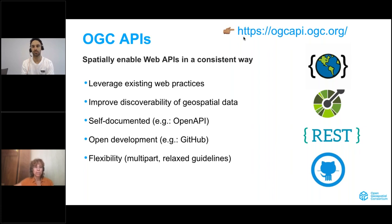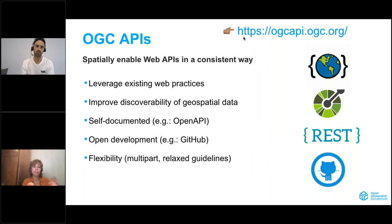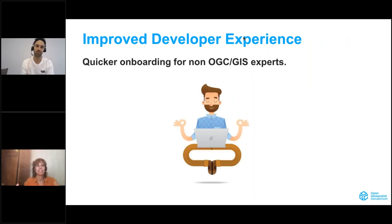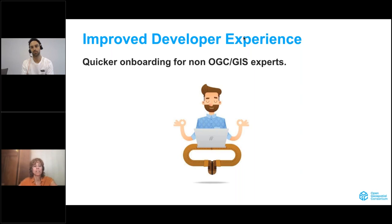These standards are very flexible — they are developed in parts, so you can use just parts of the standards like building blocks, like pieces of Lego that you can combine and bring to your APIs. They are also flexible regarding encodings — there are no mandatory encodings, but we recommend popular encodings like JSON, GeoJSON, or HTML since this is what you see in the web anyway. The main goal is to improve the developer experience, so that even if you're not an OGC expert or GIS expert, it's easy to look at these standards, learn them, and start implementing them.